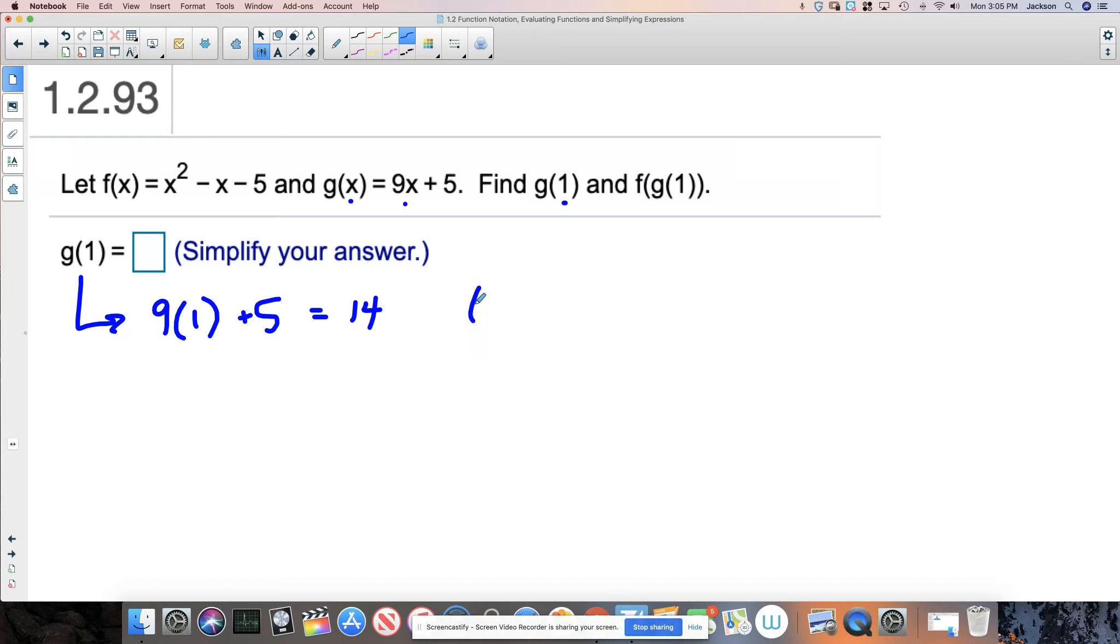So what that means is when I plug in 1, I get 14. Here's something we haven't really talked about: at the end of this, you could say that the output from function g, when 1 is plugged in, is 14. So this is an equivalent statement, which means when I write this, I can replace it with that, right? Because they're equal. g of 1 is 14.